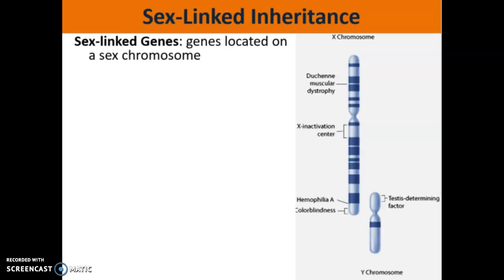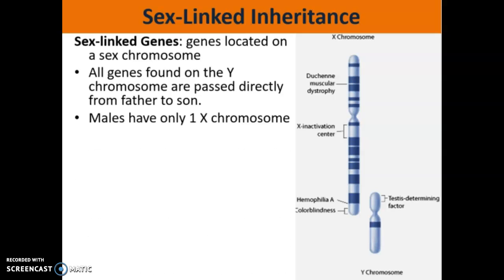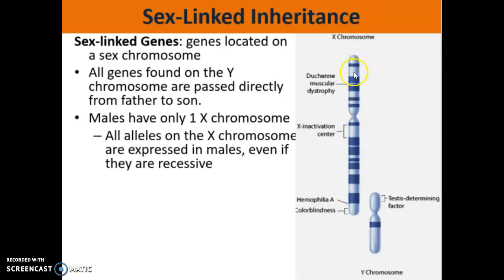Let's talk about some sex-linked genes. Sex-linked genes are genes located on one of the sex chromosomes — either the X chromosome or the Y chromosome. The X chromosome is much larger and contains many more genes, so most sex-linked genes are found on the X chromosome. The few found on the Y chromosome are passed directly from father to son. Females have no copies of the Y chromosome, so they have no chance of getting any traits found on it. Males only have one X chromosome, which means all traits on the X chromosome get expressed in males, regardless of whether they're dominant or recessive.